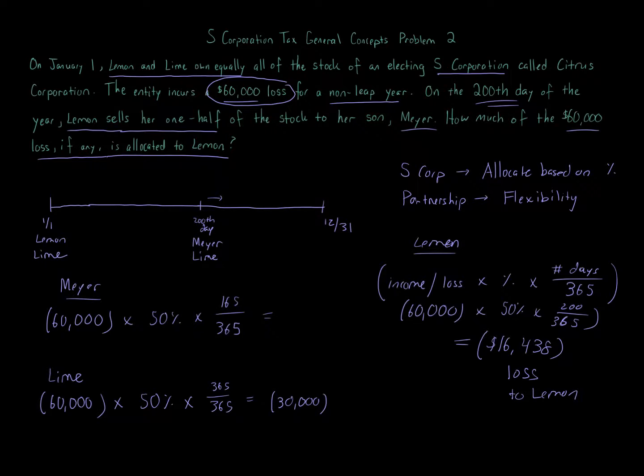Now one thing, if the ownership changes, like let's say Lemon sold a portion of the stock to Meyer, you would do two separate calculations. You would do one calculation for the first 200 days based on the percentage, and then you would add to it another calculation with the new percentage and the remaining days.